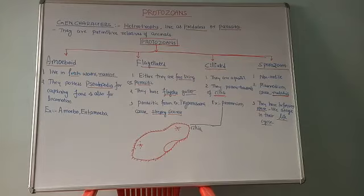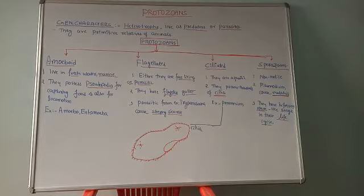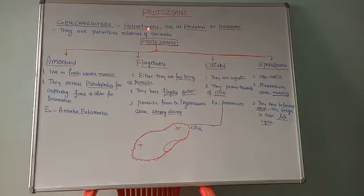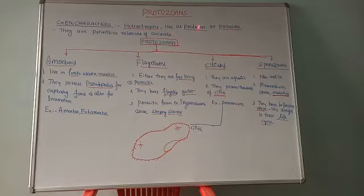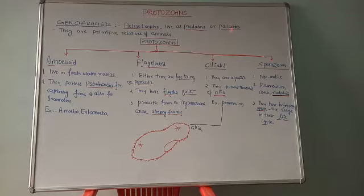As the name itself indicates, protozoa — 'proto' means primitive, 'zoa' means animals — so they are primitive animals. These protozoans are primitive animals and since they are animals, they draw nutrition from other organisms. The mode of nutrition in this group is heterotrophic. Almost all of them are heterotrophs, and with reference to their nature, some of them are predators and some of them are parasites.